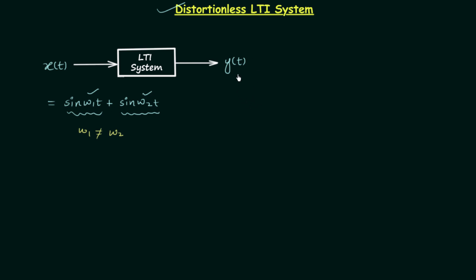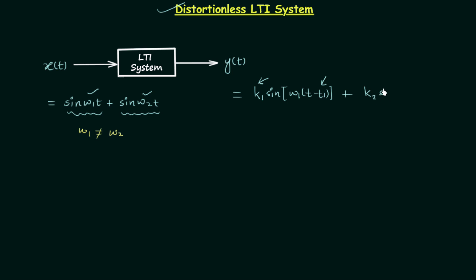Let's find out the output y(t). The output y(t) will be equal to k1 times sin(w1·t − t1). We have assumed k1 as the amplification of the first term and the time delay as t1. Now for the second term: it will have different amplification compared to the first term because the system has magnitude distortion. So the second term is k2·sin(w2·t − t2), where t2 is the amount of delay and it will be different from t1 because the system has phase distortion.